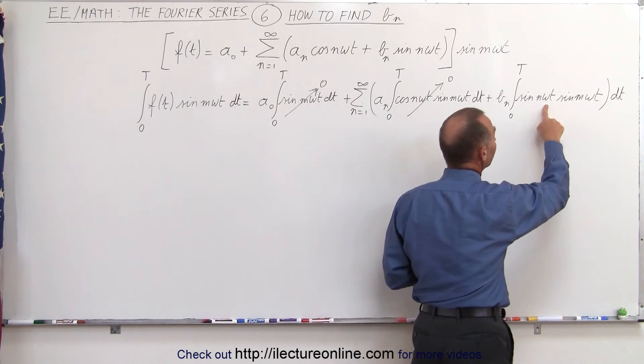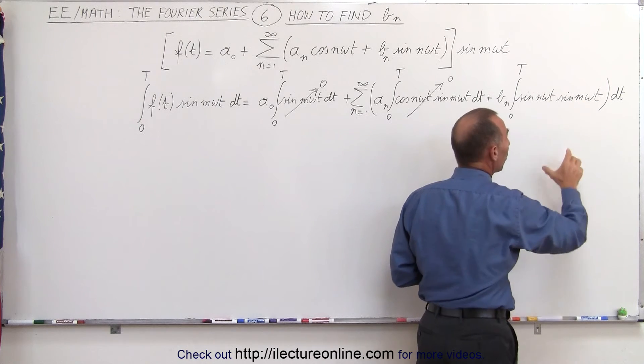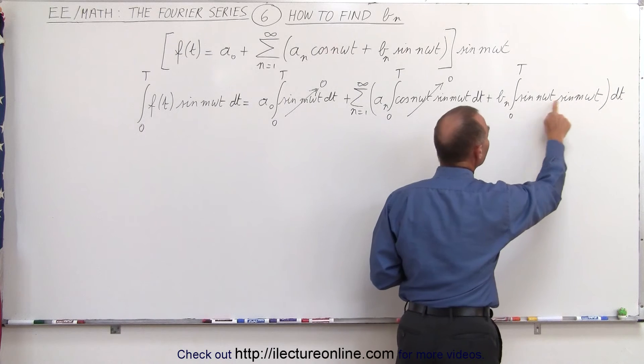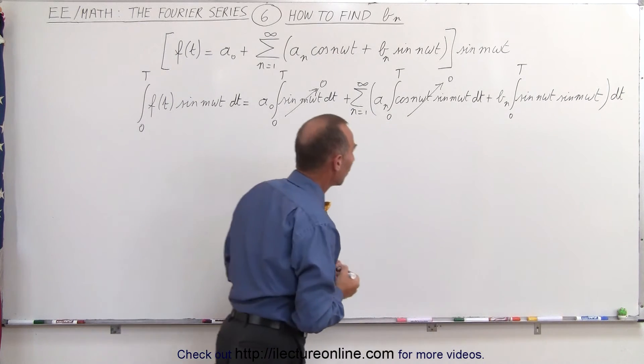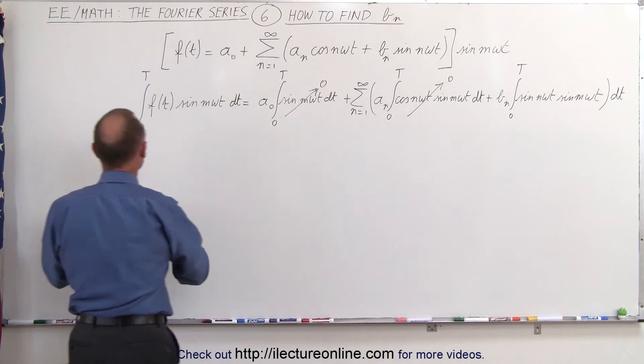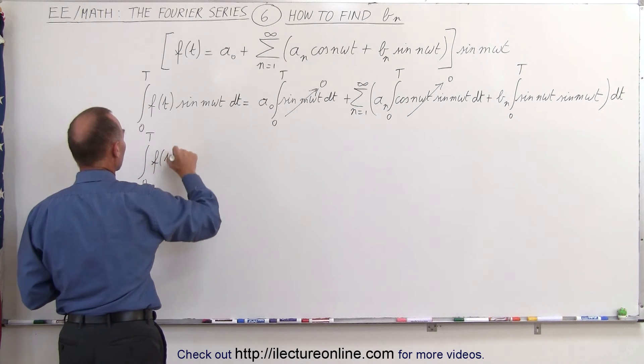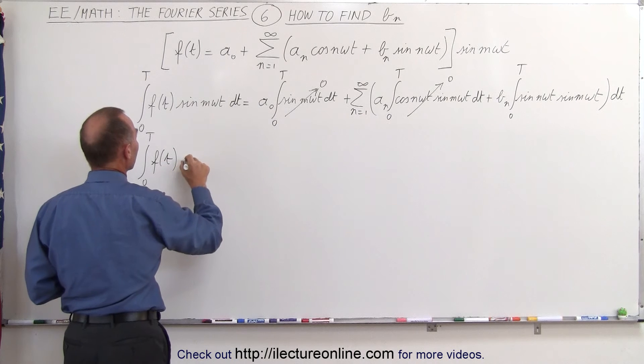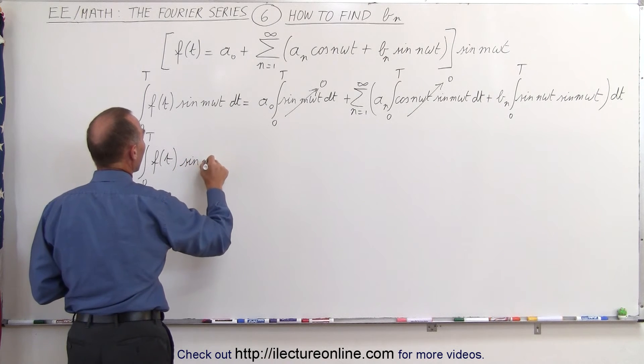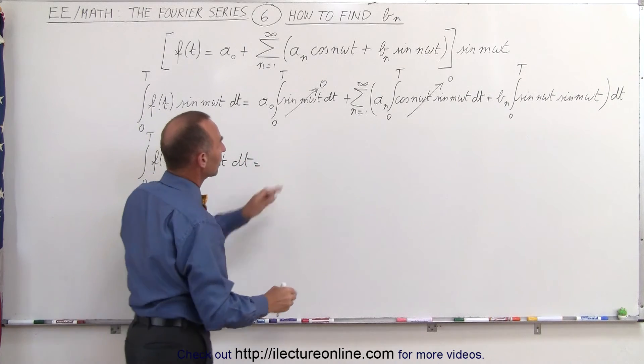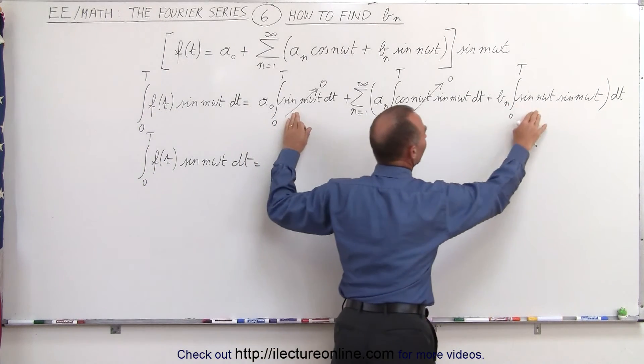And then we realize this term, the sine of n omega t times the sine of m omega t, will not equal 0 under one condition, which is when n and m are equal to one another. In other words, that means that the left side, the integral from 0 to T of the original function—remember this is the periodic function of t—times the sine of m omega t dt, will be equal to, well, these two are 0,